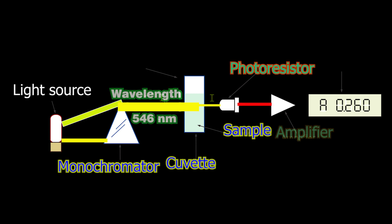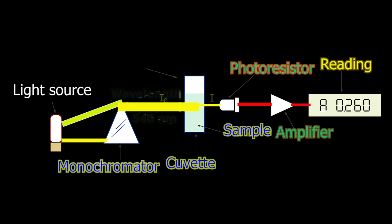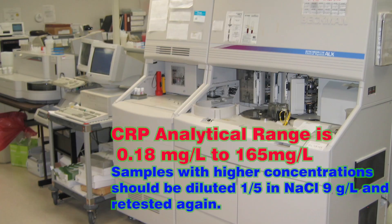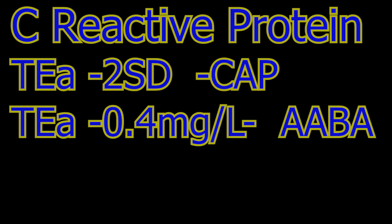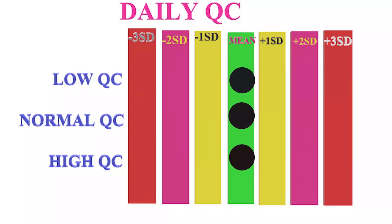A photodetector collects light that passes through the cuvette, and a measurement is given for the amount of observed light. For standard CRP, the analytical range is 0.18 to 165 mg/L. For high-sensitivity CRP, the analytical range is 0.5 to 10 mg/L. Total allowable error is 2 SD according to CAP, and 0.4 mg/L according to the American Association of Bioanalysts.